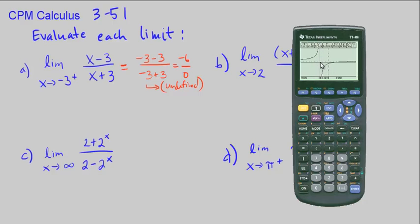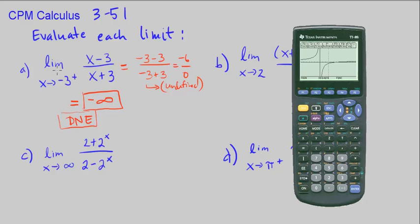As x approaches negative 3 from the left and the right, the behaviors are different. From the left it's positive infinity; from the right it's negative infinity. So the limit from the right approaches negative infinity. Since infinity does not exist as a real number, the limit does not exist — but y is approaching negative infinity.